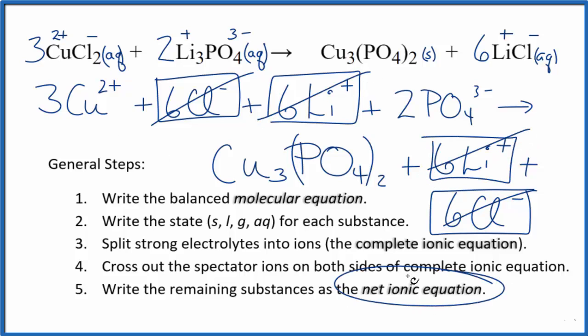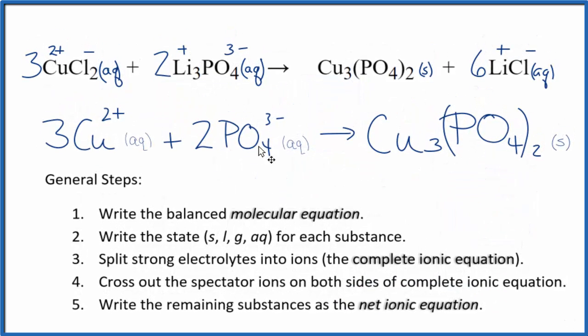What's left, that's the net ionic equation for CuCl2 plus Li3PO4. I'll clean this up and write the states. We'll have our net ionic equation. So this is the balanced net ionic equation for copper two chloride plus lithium phosphate.